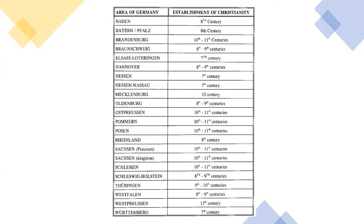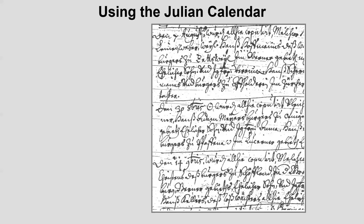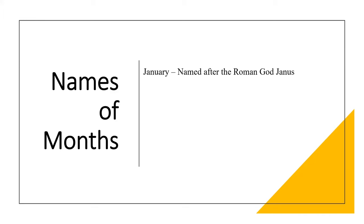When was Christianity established in the various areas of Germany? This chart — one of the handouts for this lecture — shows the nobility and provincial areas of Germany and the century in which Christianity was first established. This marriage record is a good example of how dates can be misinterpreted when using the Julian calendar. The date of the first marriage entry is the 7th of August. The second entry is the 30th of Okbrus, and the third entry is the 14th of Neumbrus. To understand these dates, we need to know how the months and the year were named. The month of January was named after the Roman god Janus. February comes from the Latin word februm, meaning purification, during which people prepared for March, which was named after the Roman god Mars and was the first month of the year.